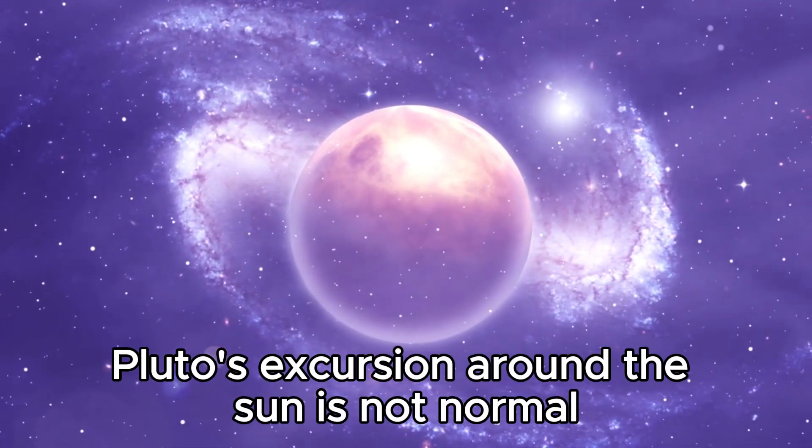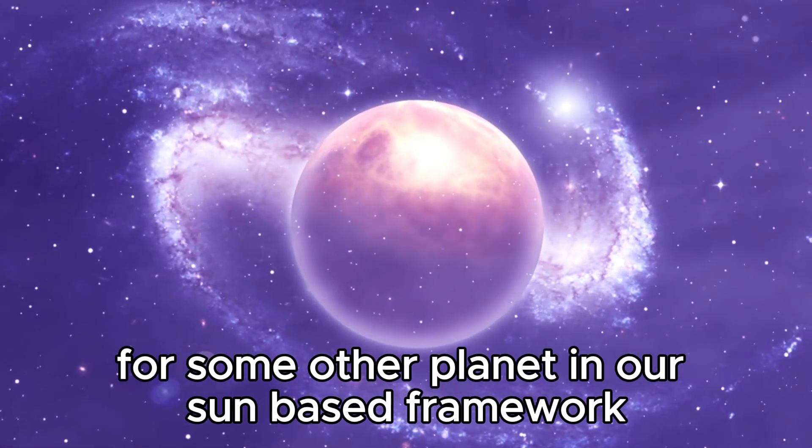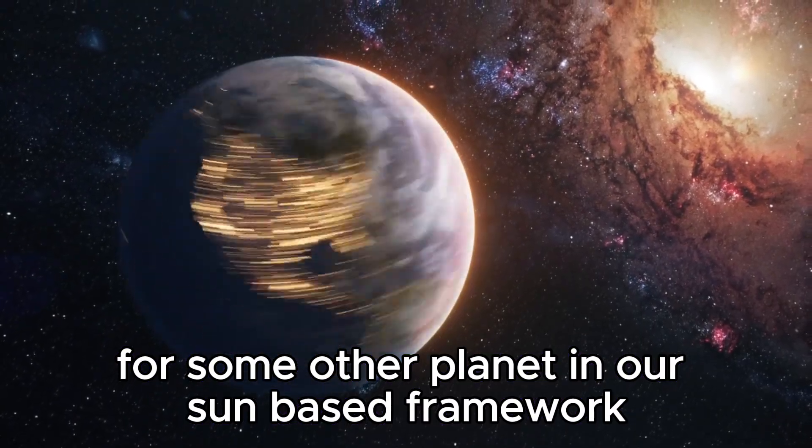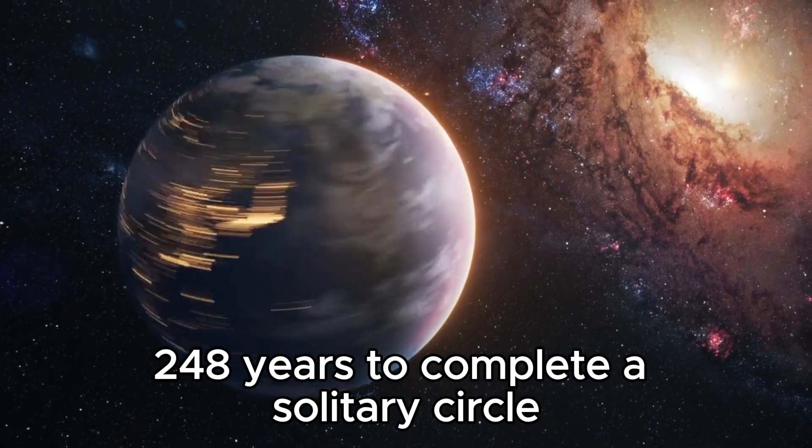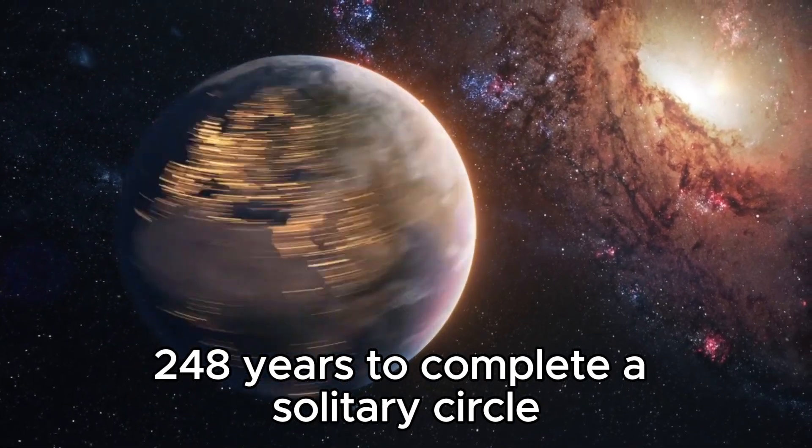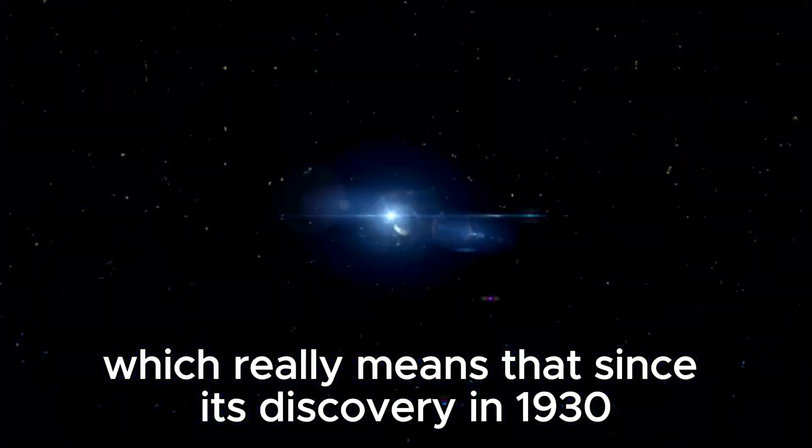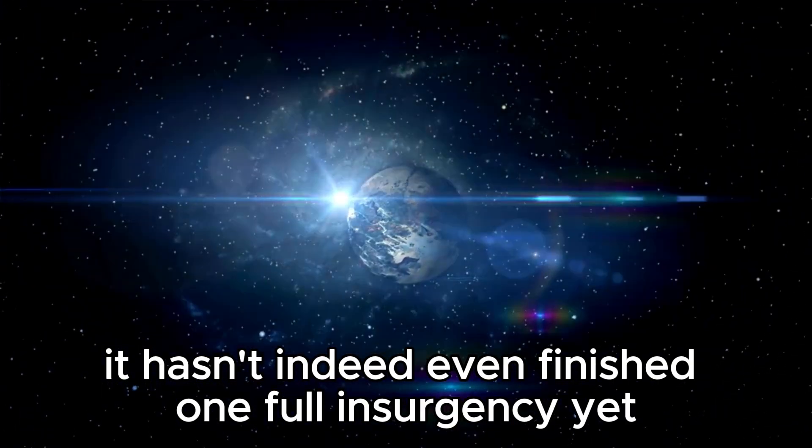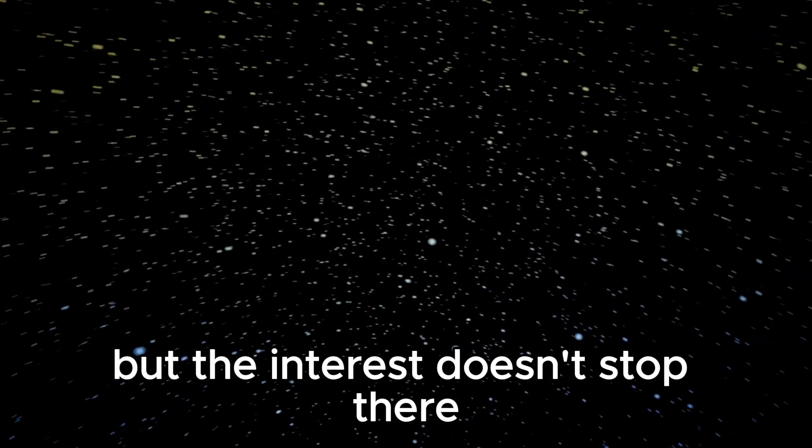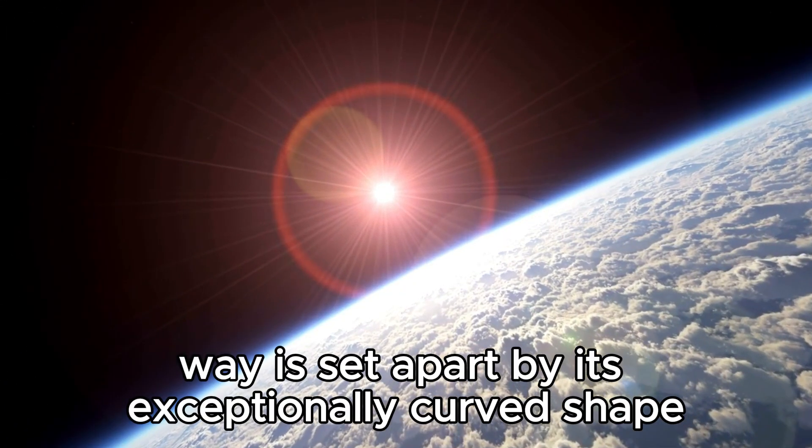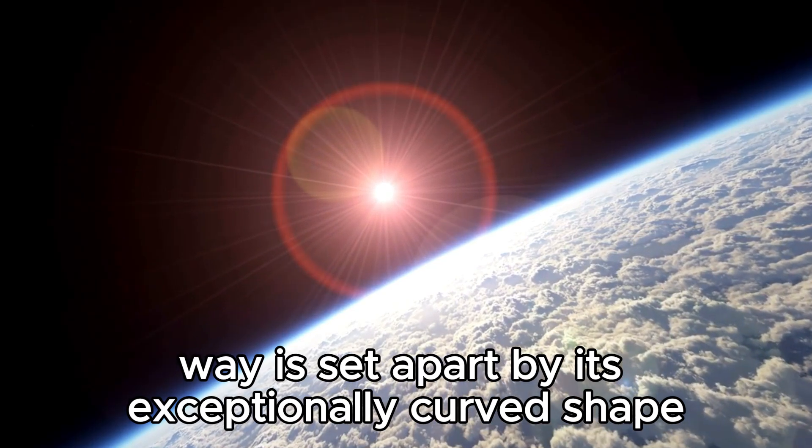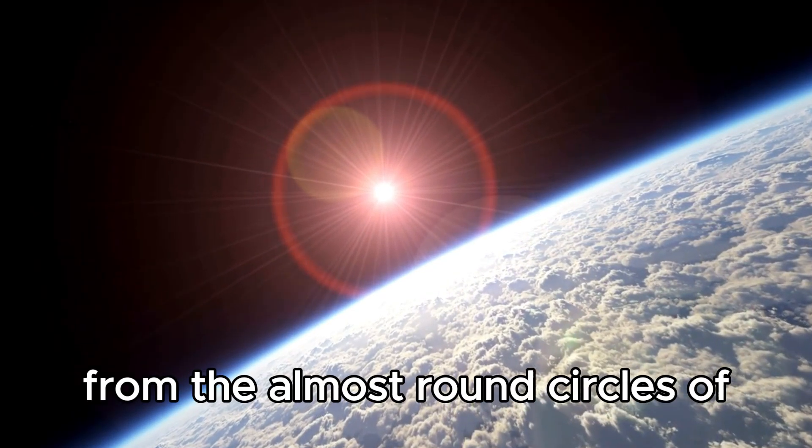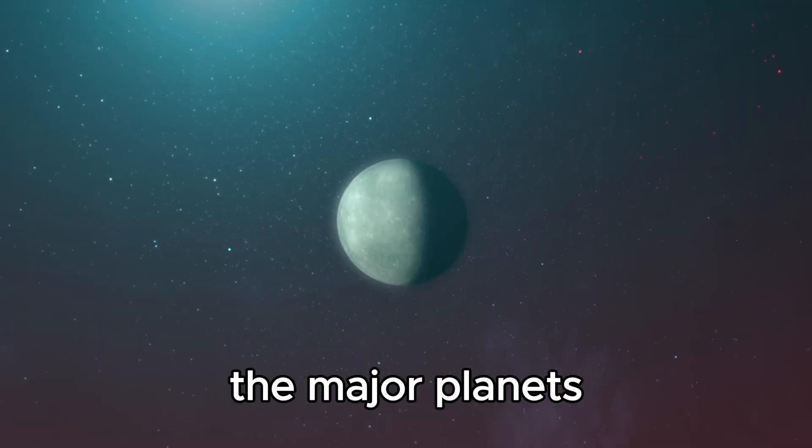Pluto's journey around the sun is unlike any other planet in our solar system. It requires an incredible 248 years to complete a single orbit, which means that since its discovery in 1930, it hasn't even finished one full revolution yet. But the intrigue doesn't stop there. Pluto's path is marked by its exceptionally curved shape, straying fundamentally from the nearly round orbits of the major planets.